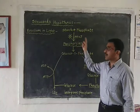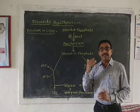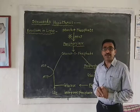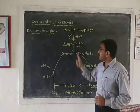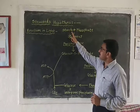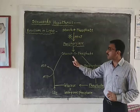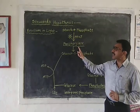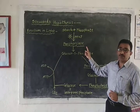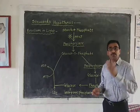When the pH of the guard cells increases up to seven, the enzyme phosphorylase becomes active. This phosphorylase enzyme converts starch into glucose-1-phosphate. Phosphorylase enzymes are active when the pH of the guard cell increases up to seven.